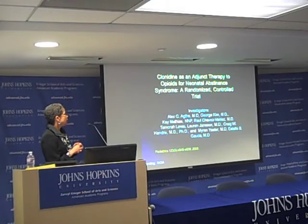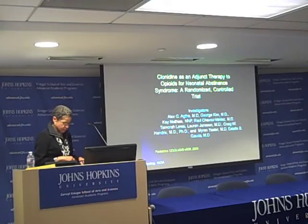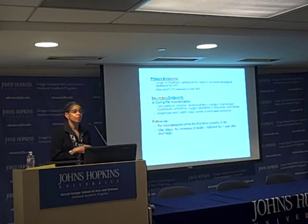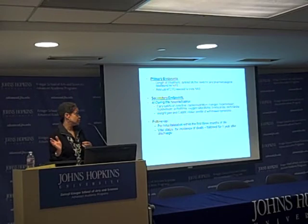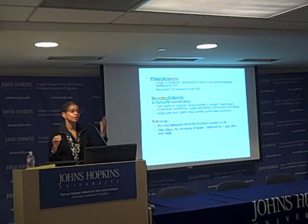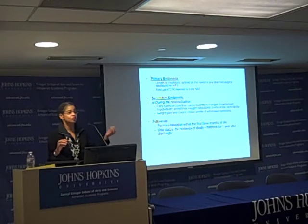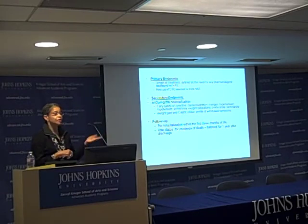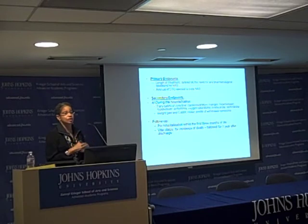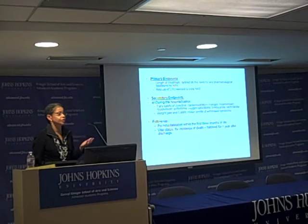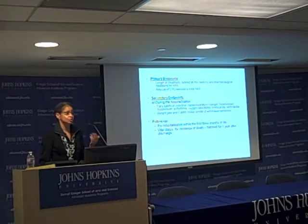So we embarked upon a randomized controlled trial. We took babies born to mothers exposed to methadone or heroin and randomized them to treatment with an opiate called DTO — deodorized tincture of opium — and nothing else, or to DTO plus clonidine. It was blinded, so we didn't know which babies got placebo versus clonidine. Our primary endpoint was the length of treatment — defined as the need for any pharmacological treatment for neonatal abstinence syndrome — and the amount of DTO needed. Secondary outcomes included abstinence scores and any adverse effects from hypotension or bradycardia.